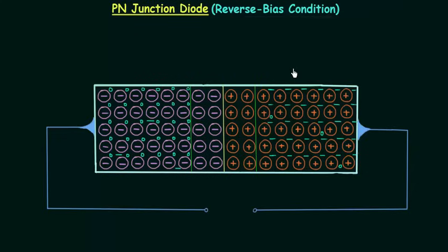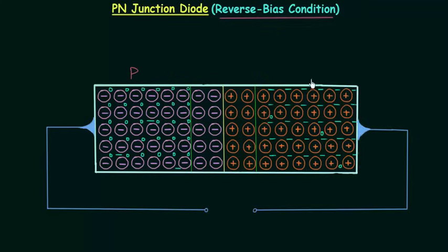In the last two lectures we completed the no bias and forward bias conditions of the PN junction diode. In this lecture we will discuss the reverse bias condition. In reverse bias condition, the p-side of the diode is connected to the negative terminal of the battery and the n-side is connected to the positive terminal.